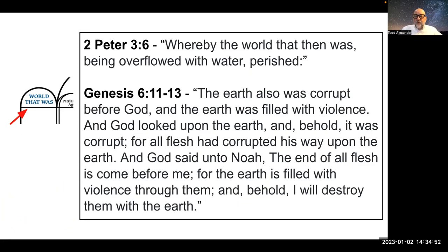He talks about a world that perished. Now, we're still living on the earth, so this cannot be speaking about the earth perishing. It's speaking about the age, and it's describing that age as a world, which means it has a unique set of circumstances which guided it and which ruled it. But here we find the name that we use on the chart: the world that was.